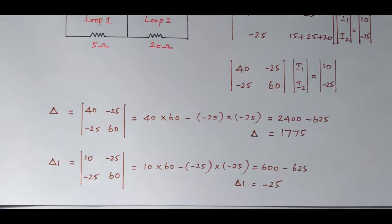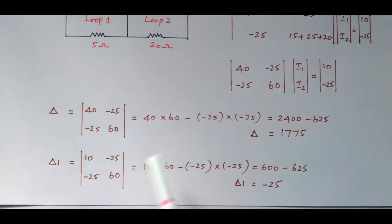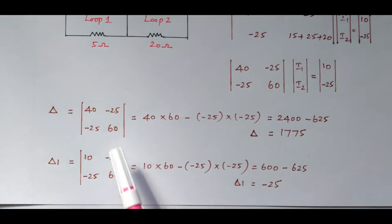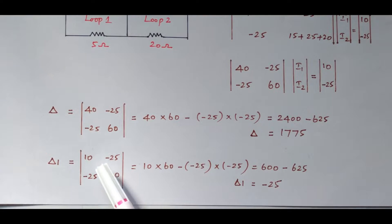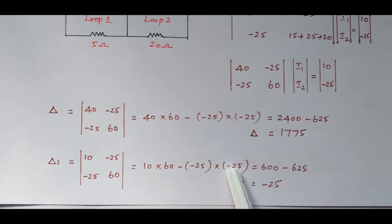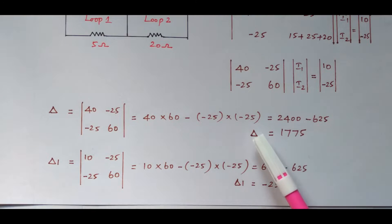To find delta 1, replace the first column with the voltage matrix [10, minus 25], keeping the second column as [minus 25, 60]. The determinant is: 10 × 60 minus (minus 25) × (minus 25). The two negatives become positive but there is a minus sign, so delta 1 = 600 minus 625 = minus 25.